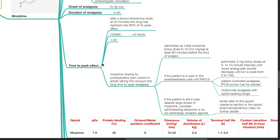Time to peak effect. It takes 1 to 2 hours to reach peak effect. Morphine dosing for post-operative pain control in adults, taking into account the long time to peak analgesia. Administer an initial morphine bolus dose 0.15 to 0.2 mg per kg at least 60 minutes before the end of surgery.